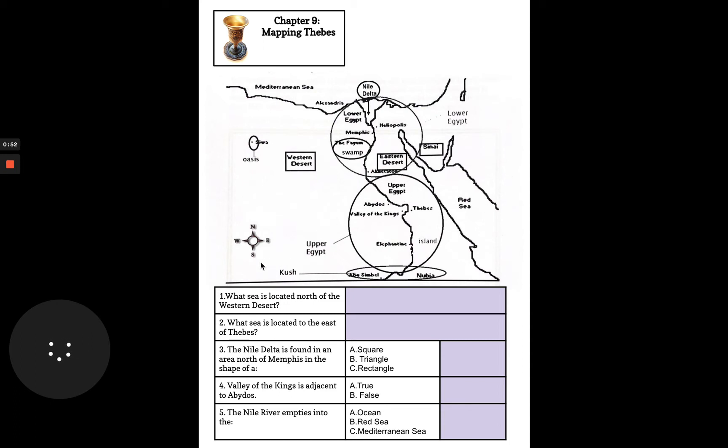So if you look at the cardinal directions of north, south, west and east, take notice of where all the different locations are located. You have Western Desert on the west. You have the Red Sea on the right.